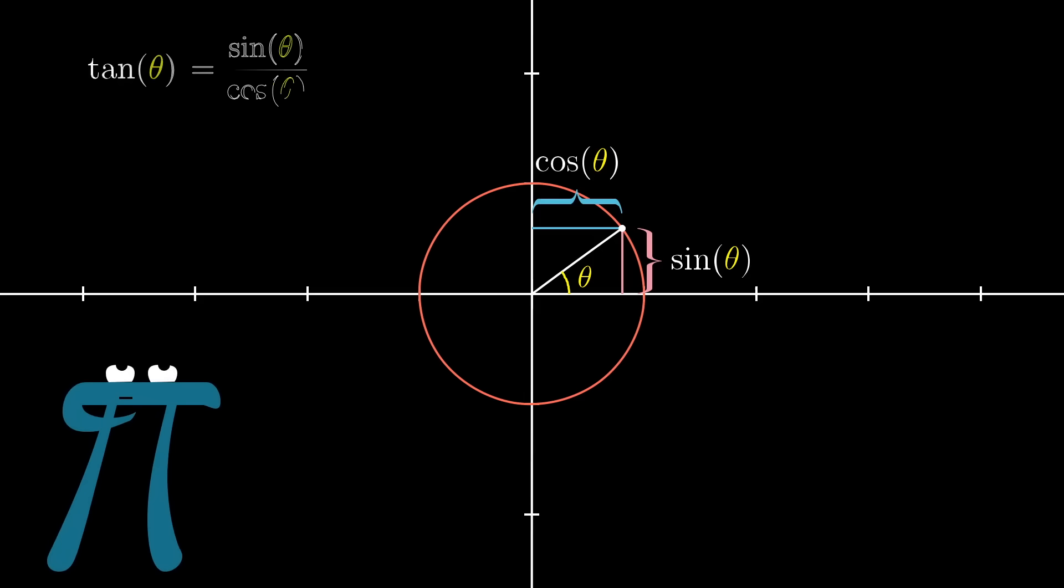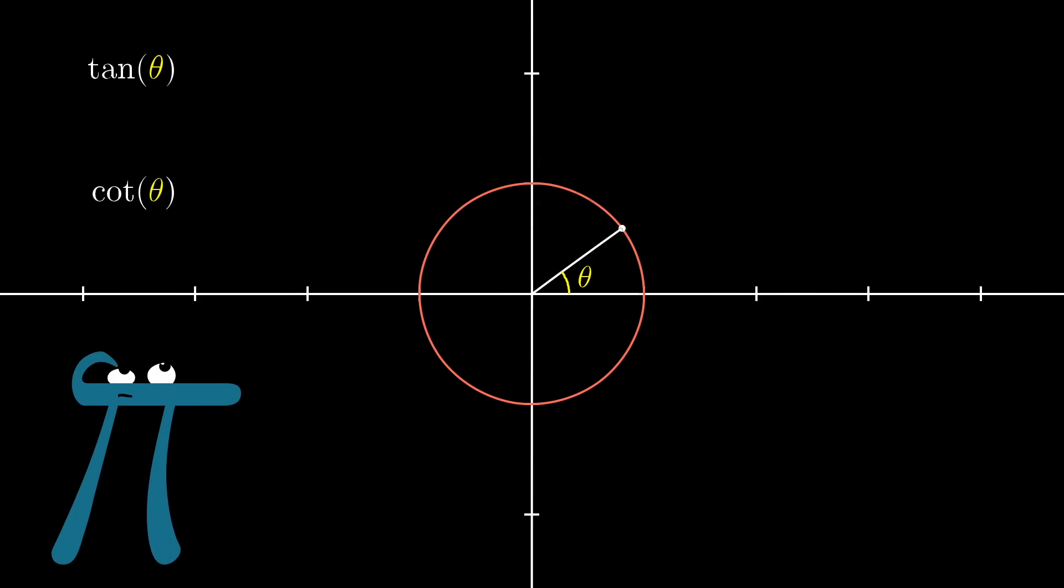People might learn that the tangent of an angle is sine divided by cosine, and that the cotangent is the other way around, cosine divided by sine, but relatively few learn that there's also a nice geometric interpretation for each of those quantities.